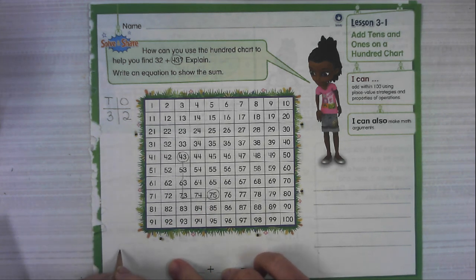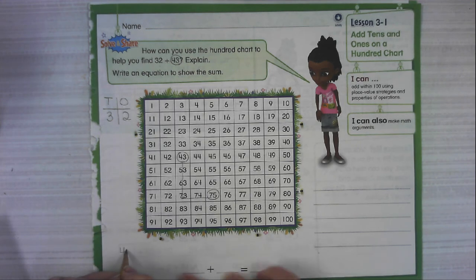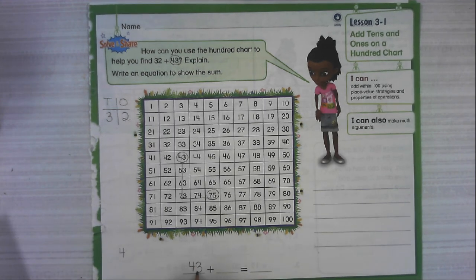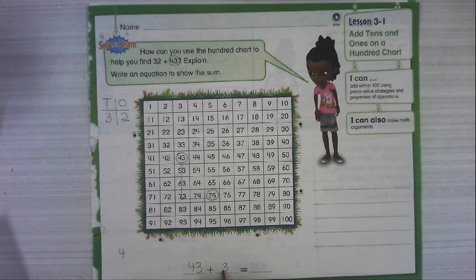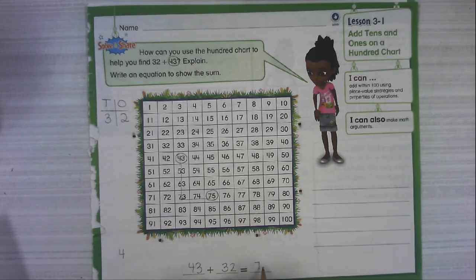So my equation could be, I'm going to put 43 first because we started there. We went up 32 and ended up at 75.